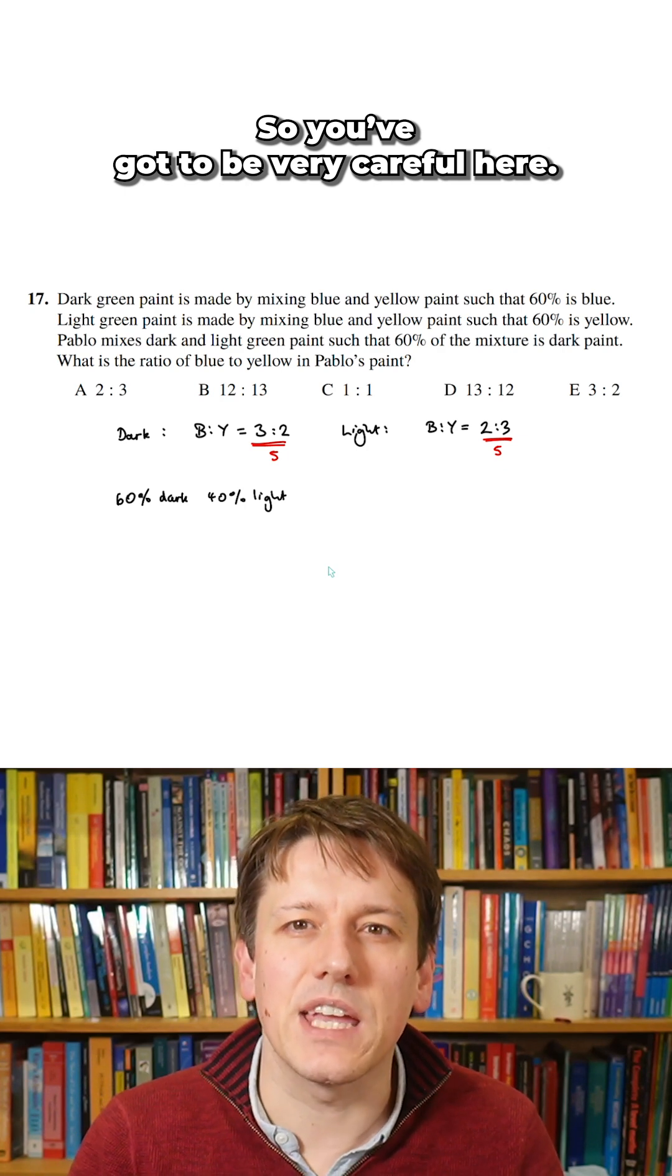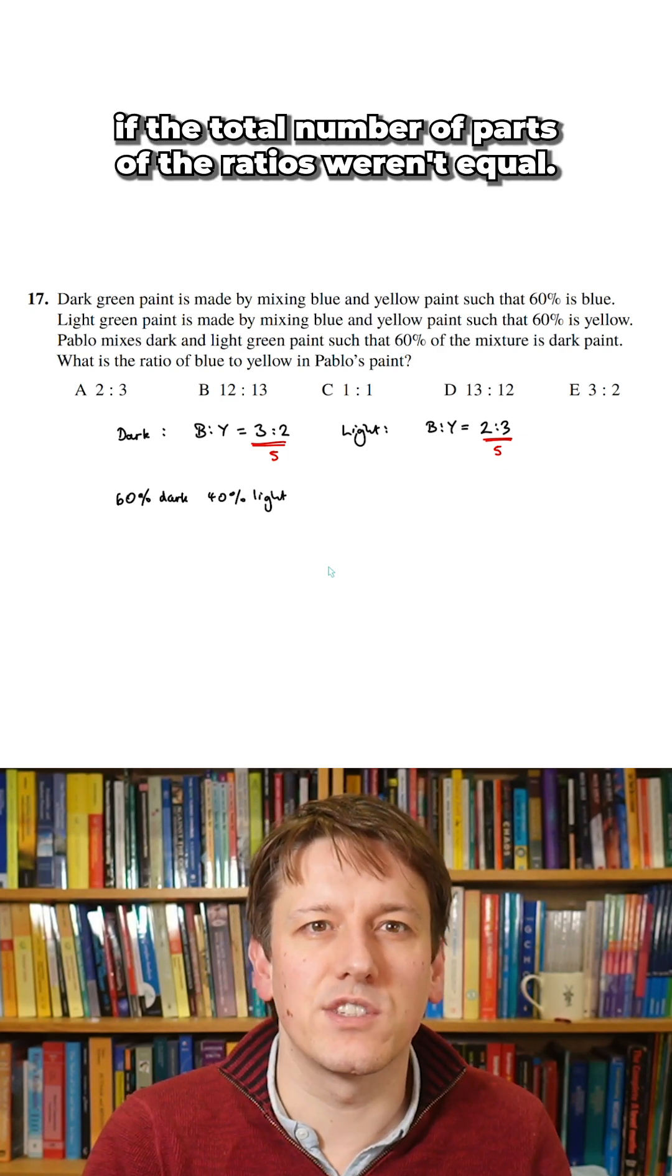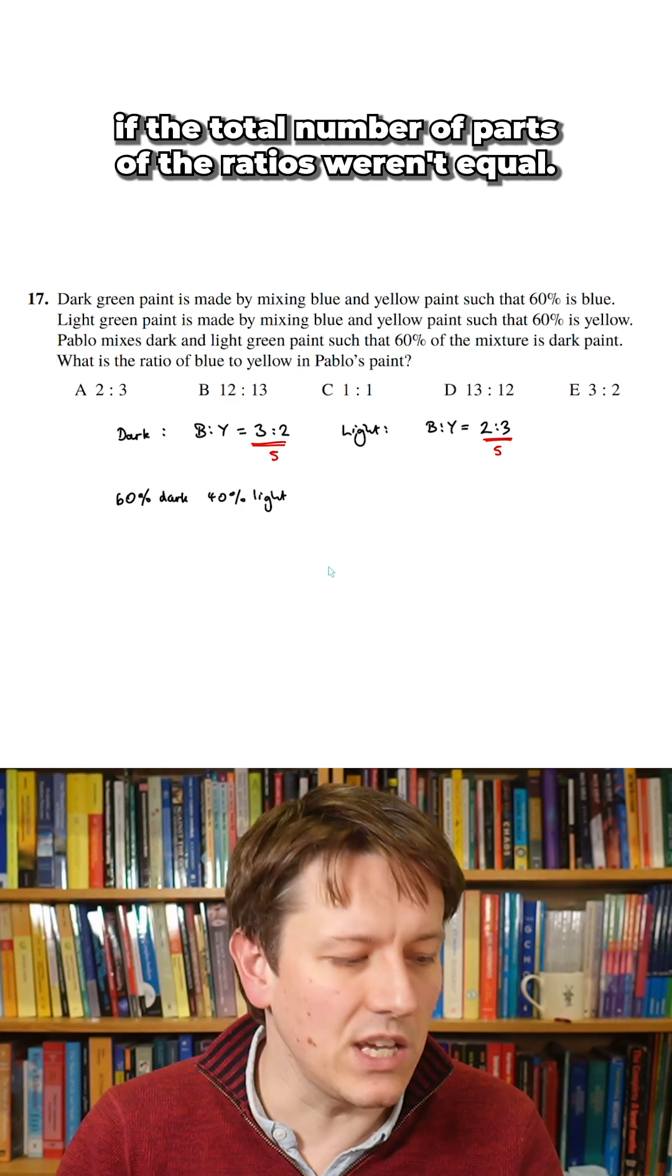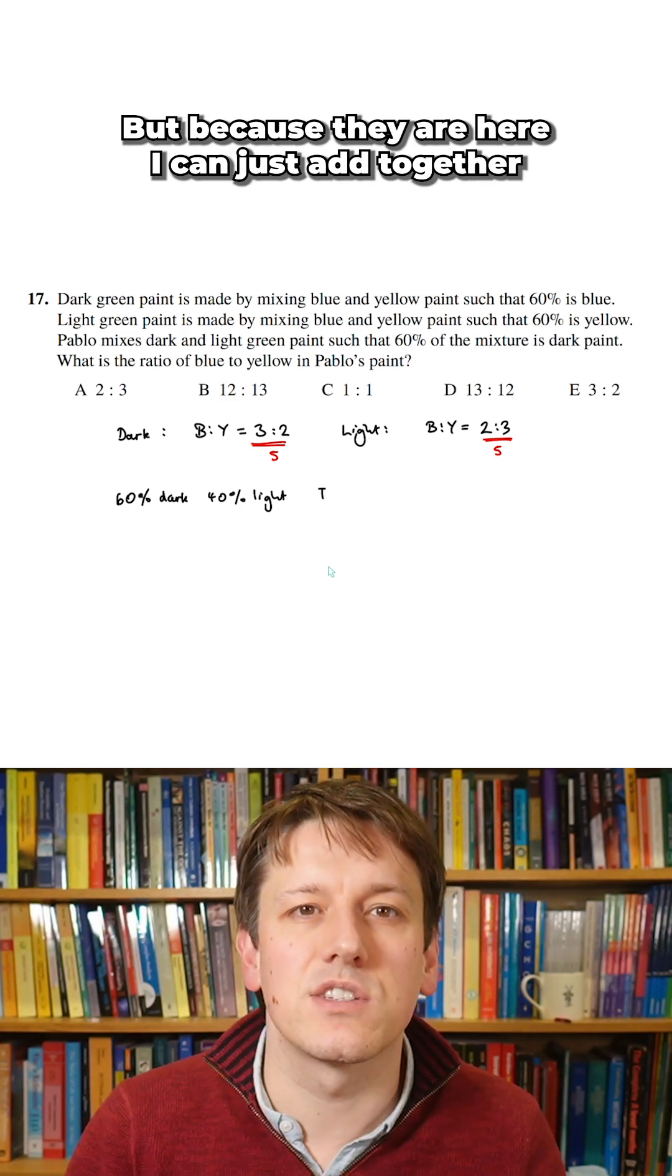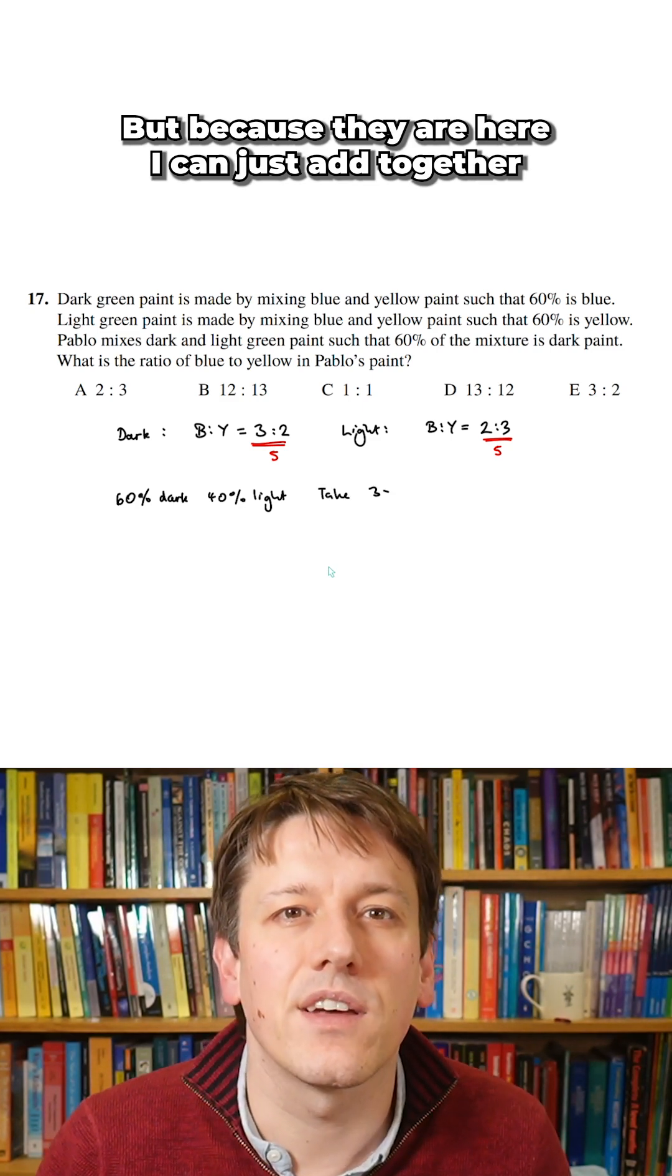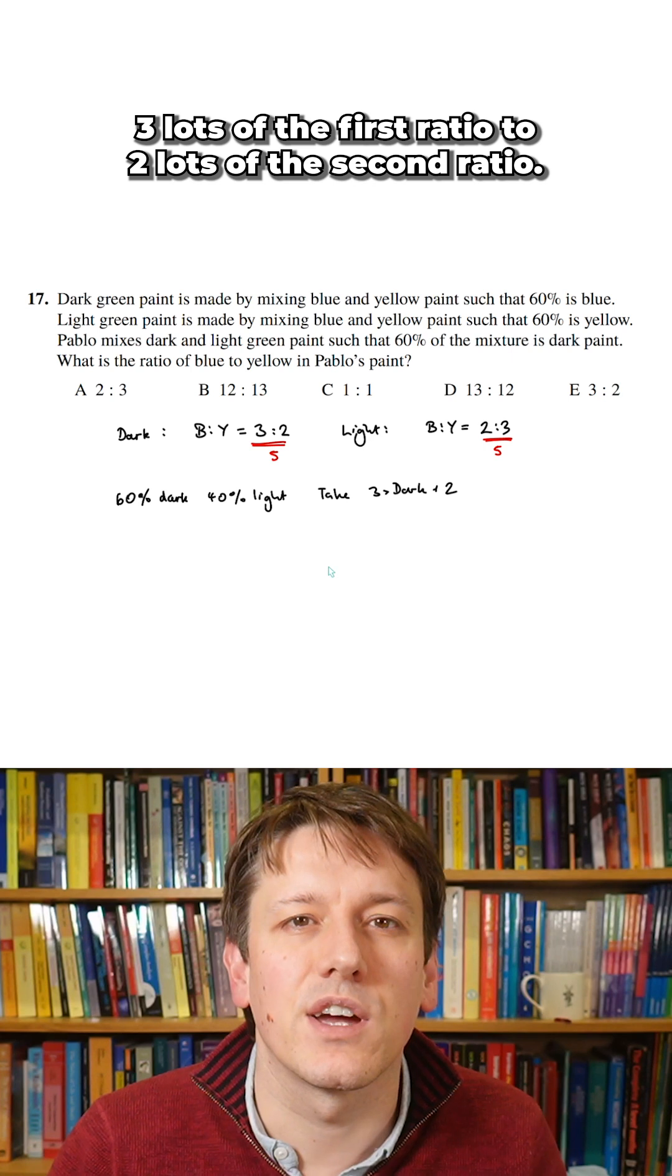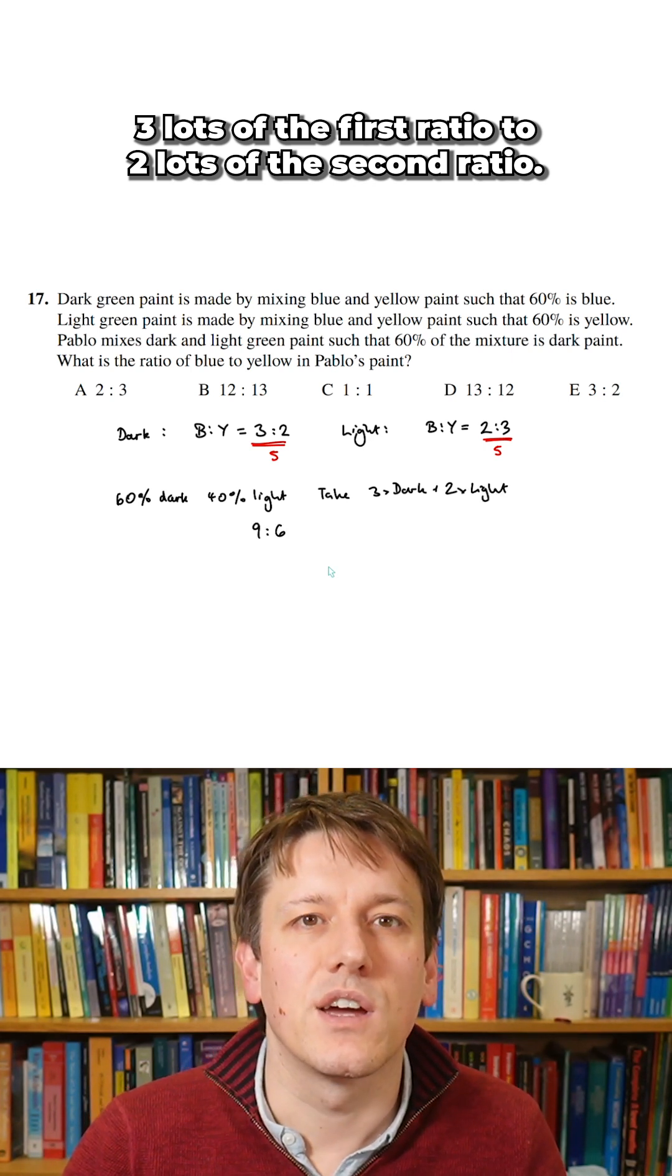So you've got to be very careful here. This method, you'd have to adjust if the total number of parts of the ratios weren't equal, but because they are here, I can just add together 3 lots of the first ratio to 2 lots of the second ratio.